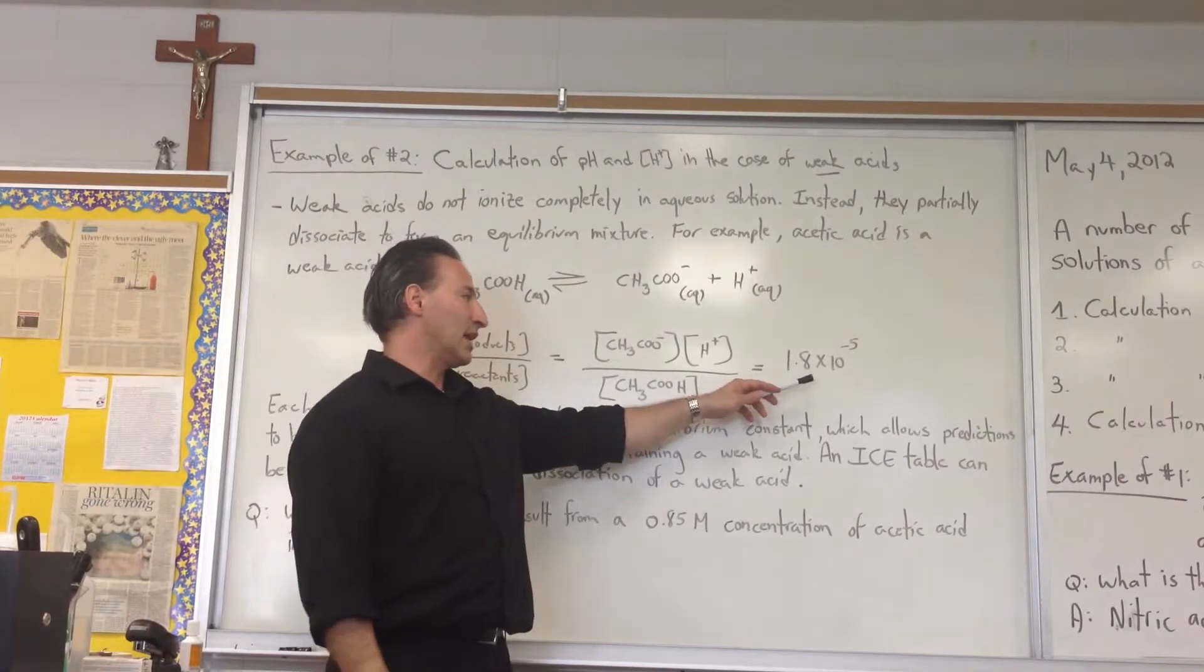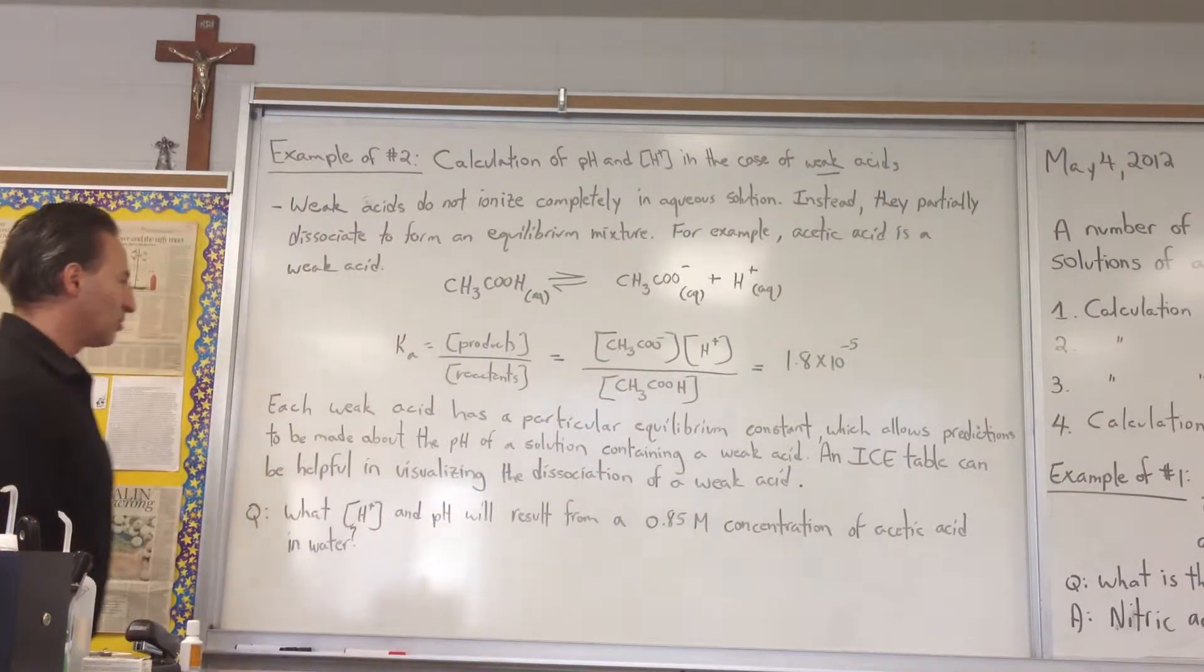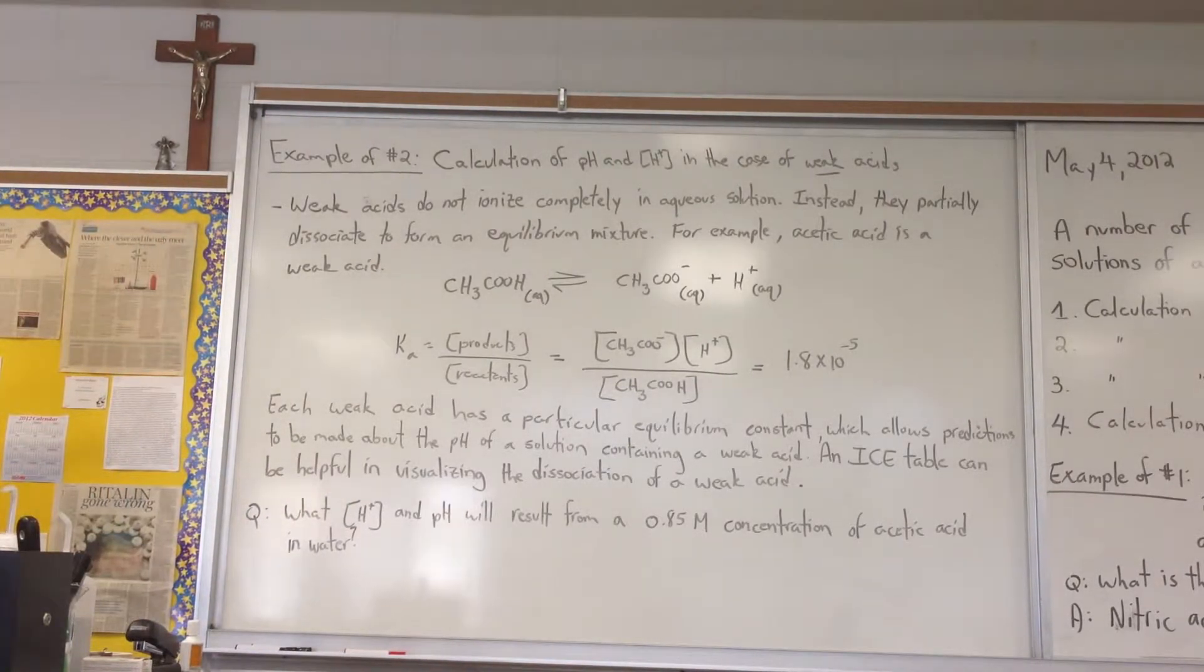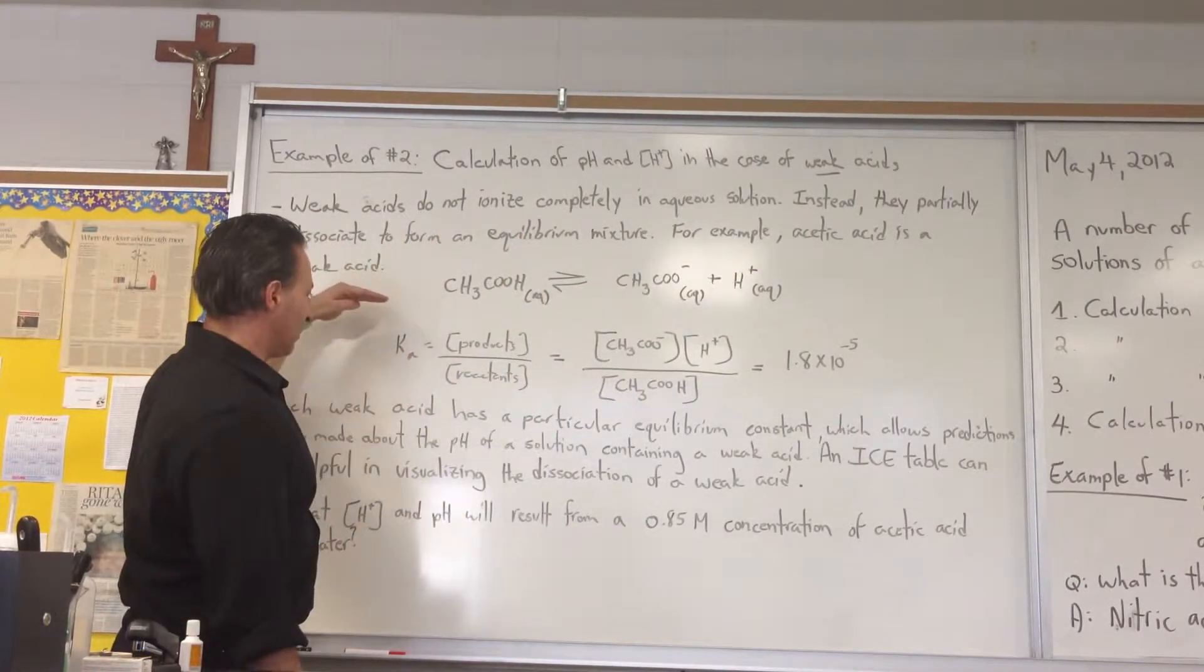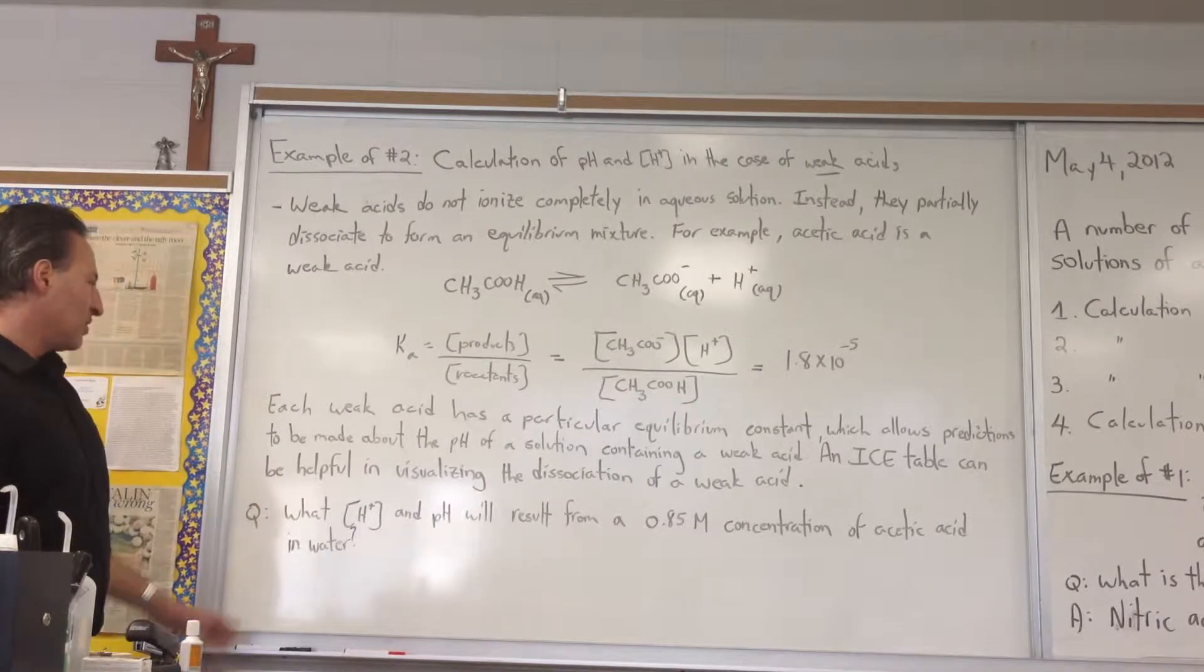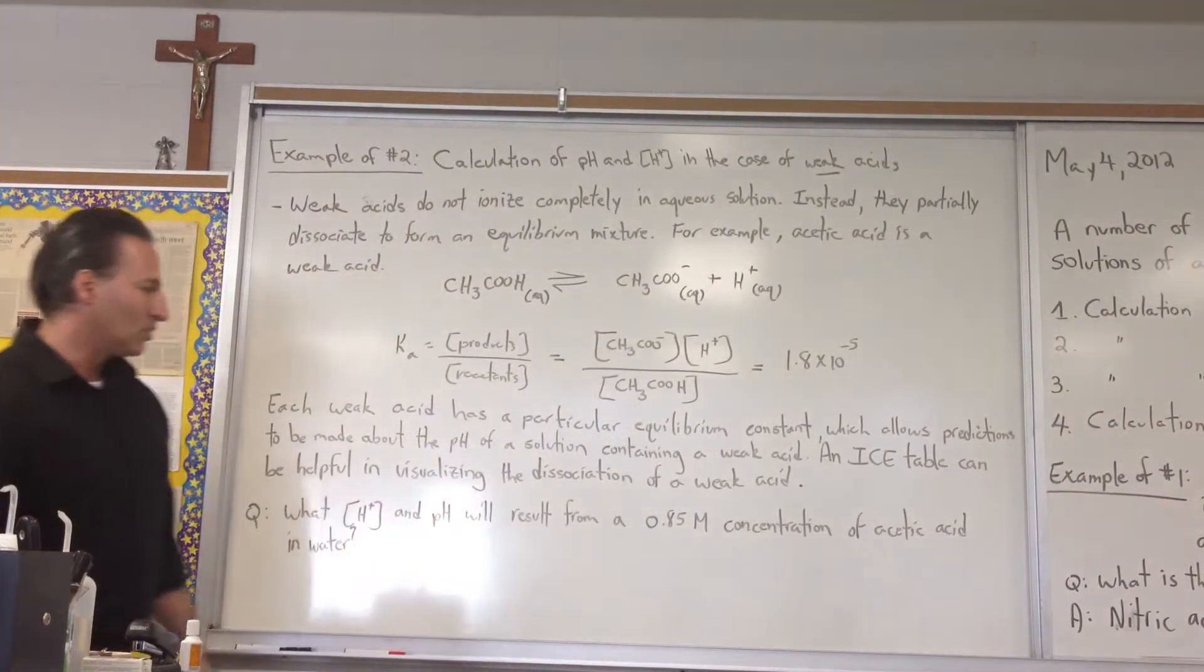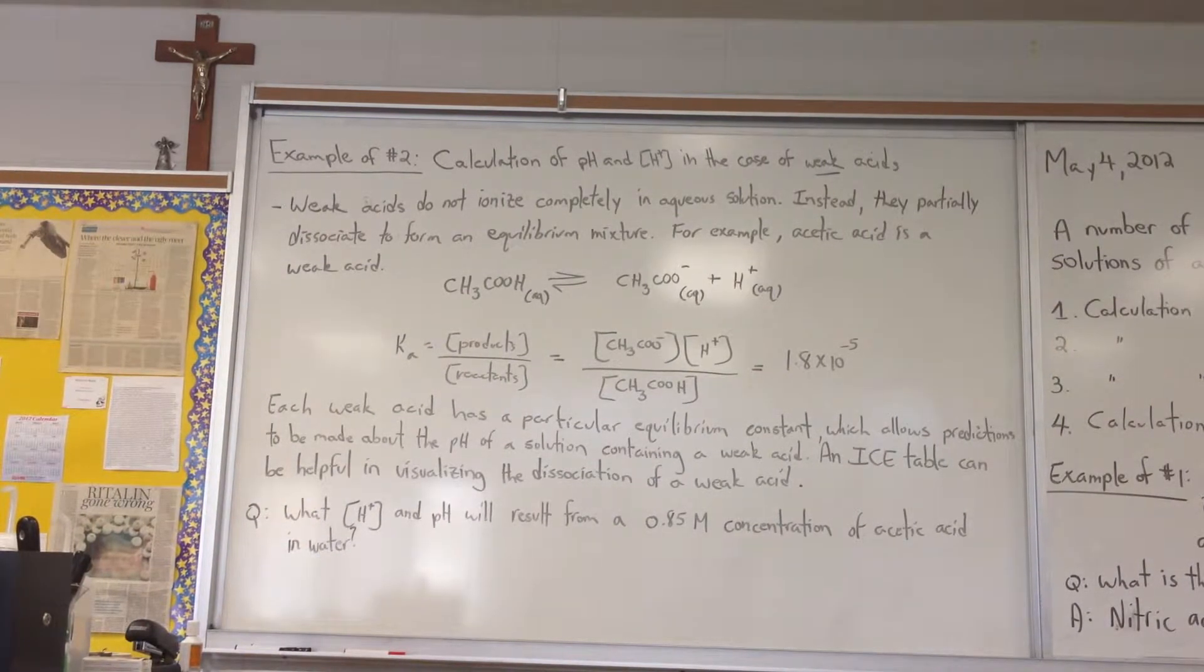In aqueous solutions of acetic acid, the equilibrium constant will work out to this number when you write in all the concentrations in moles per liter. Each weak acid has a particular equilibrium constant which allows predictions to be made about the pH of a solution containing a weak acid. In some cases, it's a good idea to write out an ICE table. You write out the equation of the dissociation and the letters ICE: I for initial concentration, C for the change, and E for the equilibrium concentration. A typical question: what is the concentration of protons and the pH that will result from a 0.85 molar concentration of acetic acid in water?